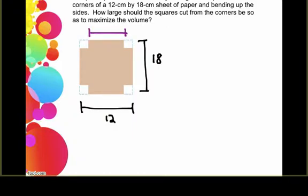So that'll be 12 minus 2x. If I now look at this side, that was originally going to be 18, but again, I've cut the two squares from the corners. So that distance now becomes 18 minus 2x. So we've taken our picture and we've labeled all the sides.